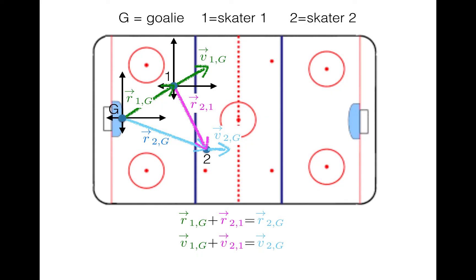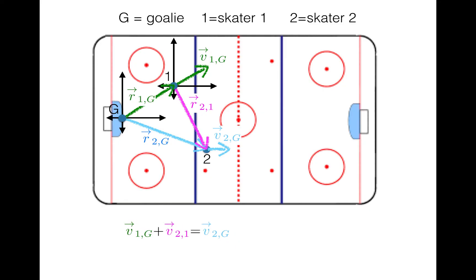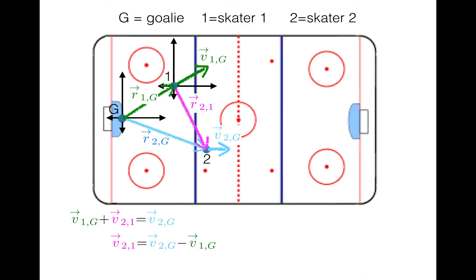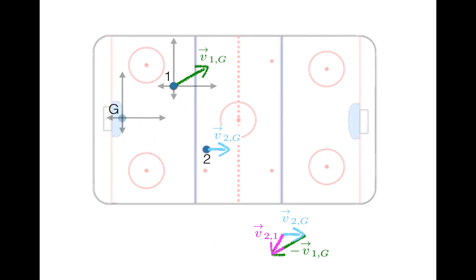That equation is going to be very useful. Note that you can differentiate again to get an equation relating accelerations: a₁g + a₂₁ = a₂g. Now let's focus on the velocity equation. I know v₁g and v₂g, and I want to find the velocity of Skater2 from the frame of reference of Skater1, so I rearrange: v₂₁ = v₂g − v₁g. That's my answer, and in graphical terms, v₂g minus v₁g looks like this — that's the velocity of Skater2 according to Skater1. If I had the vectors in component form, I could also do that calculation, and you can check to make sure this answer makes sense conceptually.